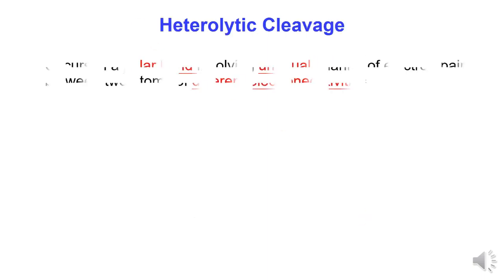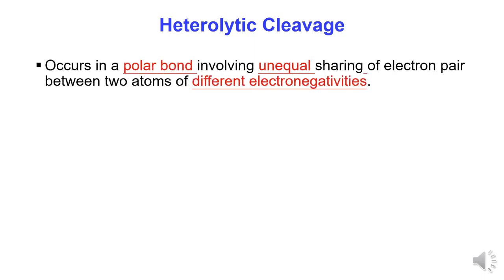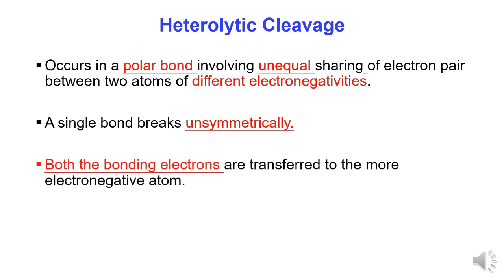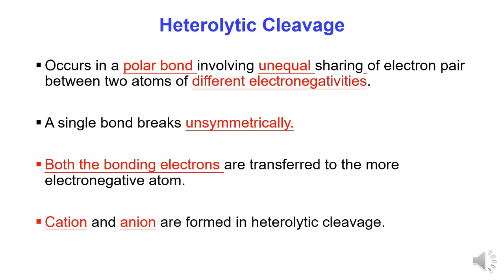Heterolytic cleavage occurs in a polar bond involving unequal sharing of an electron pair between two atoms of different electronegativity. A polar bond is broken unsymmetrically, and both bonding electrons are transferred to the more electronegative atom. A cation and an anion are formed as products.